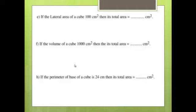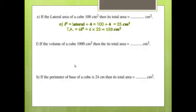Question 1E: The lateral area of a cube is 100 cm². Find its total area. L² = lateral area ÷ 4 = 100 ÷ 4 = 25 cm². Total area = 6L² = 6 × 25 = 150 cm².